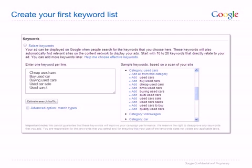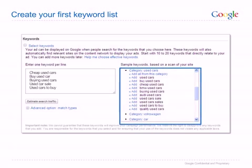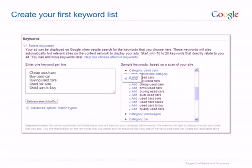Imagine what you would search for if you are looking for your product or service on Google. Note that one-word keywords are likely to be too general, so try adding phrases with two or three words. You should include relevant variations, single and plural versions, synonyms, or product and brand names. Try to add 10 to 20 keywords to get you started. Use our sample keywords to help and simply click 'add' to add them to your campaign.